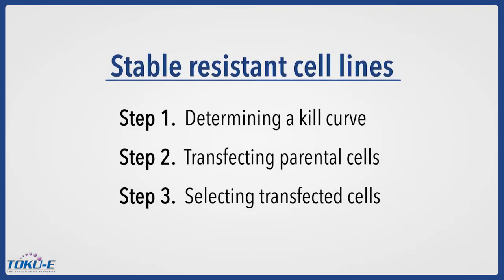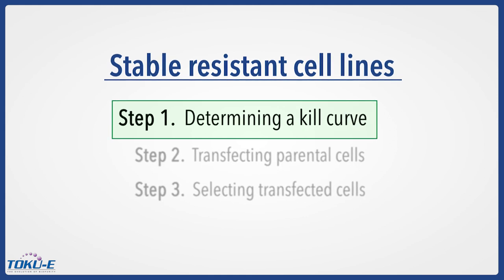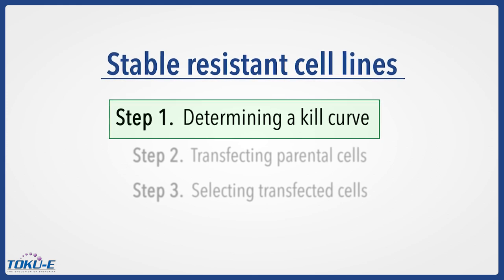In the first video, we will perform a kill curve to determine the optimal cell density for transfection and the minimal antibiotic concentration required for selecting transfected cells.